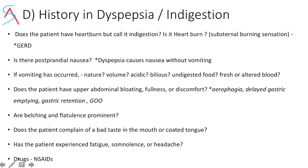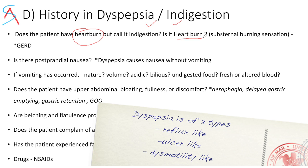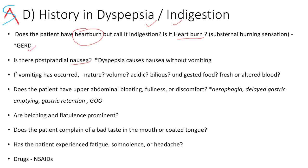Ask about dyspepsia, also called indigestion. The patient may have heartburn — a burning sensation in the epigastric region which they may mistake for indigestion. First rule this out, because heartburn indicates gastroesophageal reflux disease. Ask about nausea, vomiting, bloating, and discomfort, which can occur due to aerophagia where the patient swallows a lot of air.